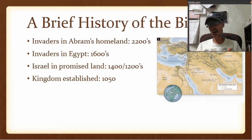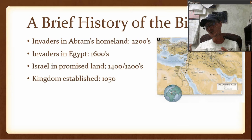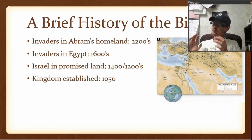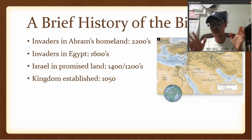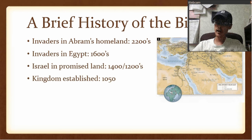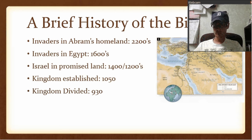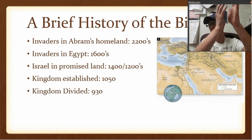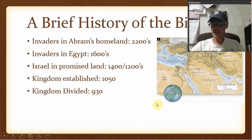King David's son Solomon becomes the wisest person in the world but falls into foolish things. God tells him the kingdom will be taken away — not in his reign but in his son's reign. Solomon's son comes to power, makes bad choices, and the kingdom divides. Ten of the tribes refuse to follow the house of David, and the kingdom is divided in 930 BC.